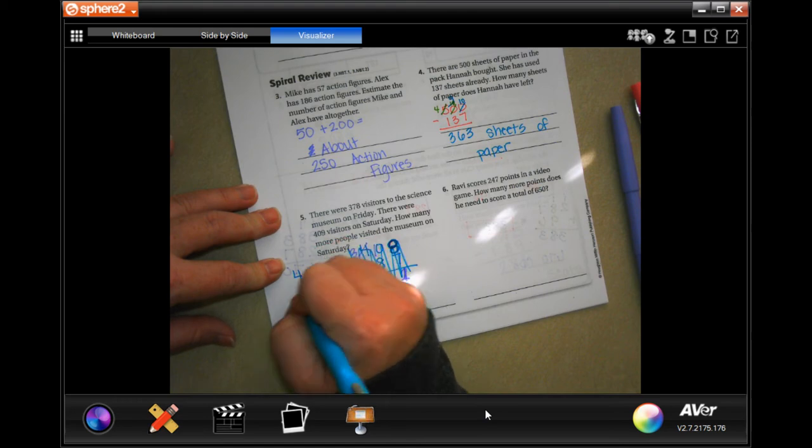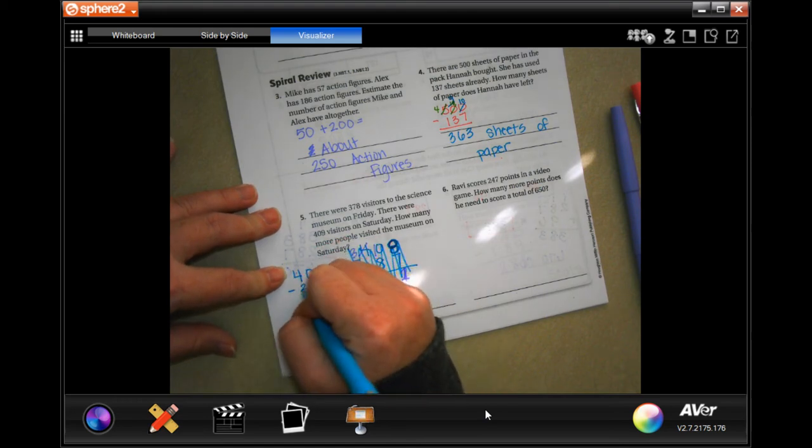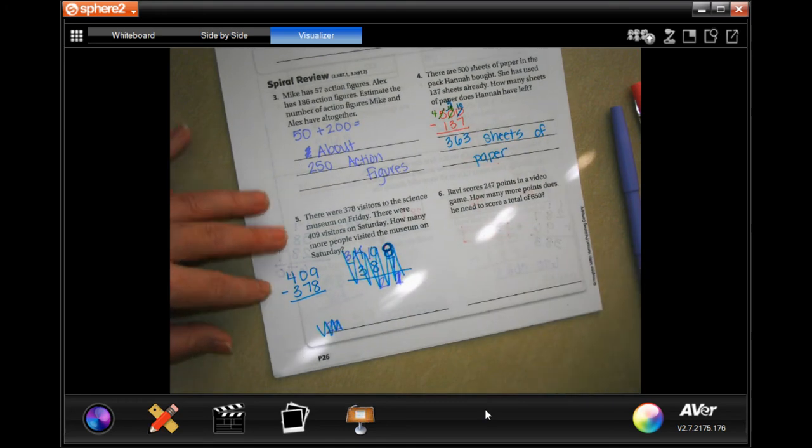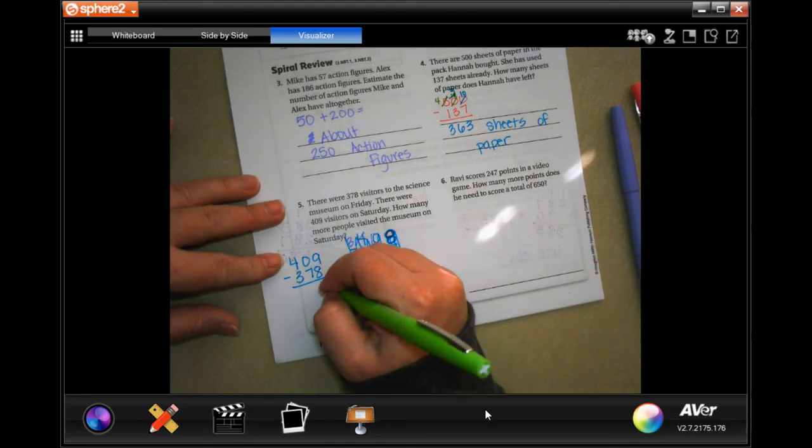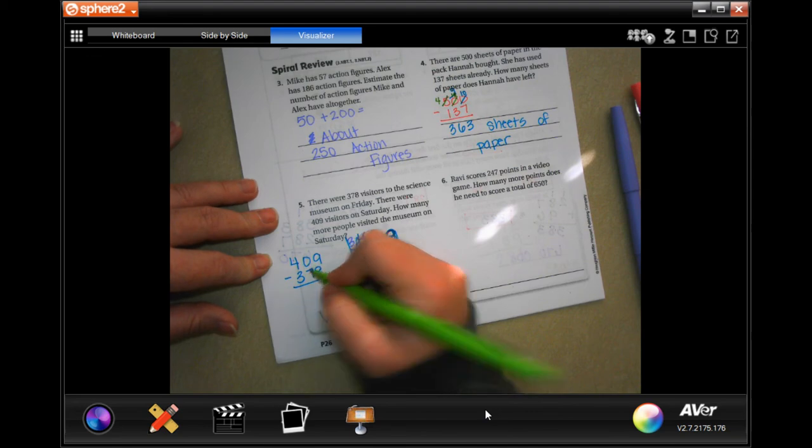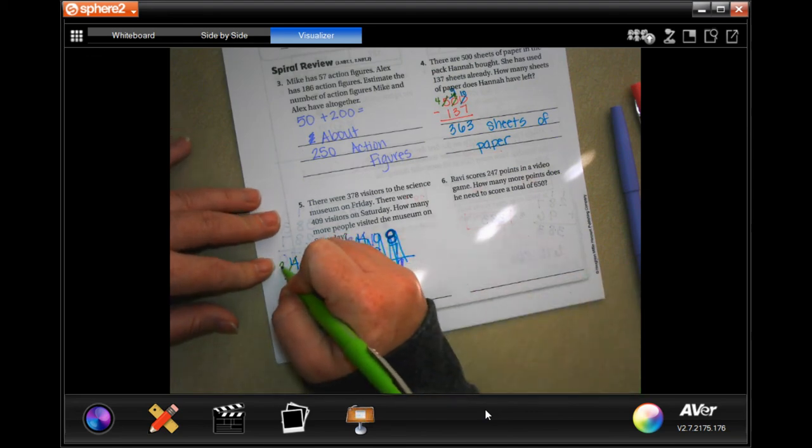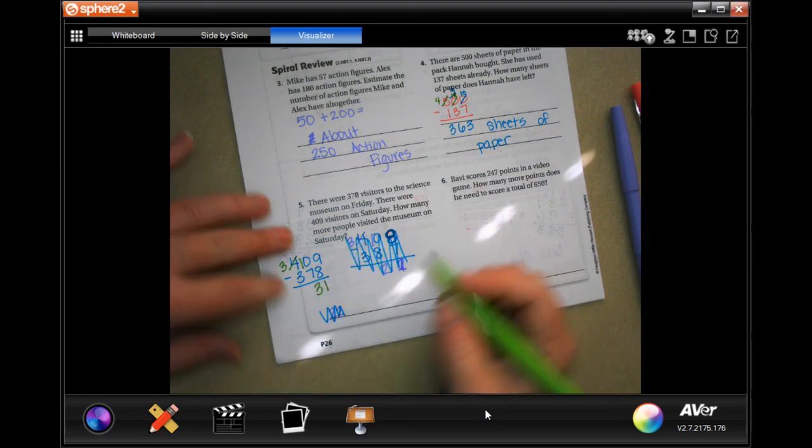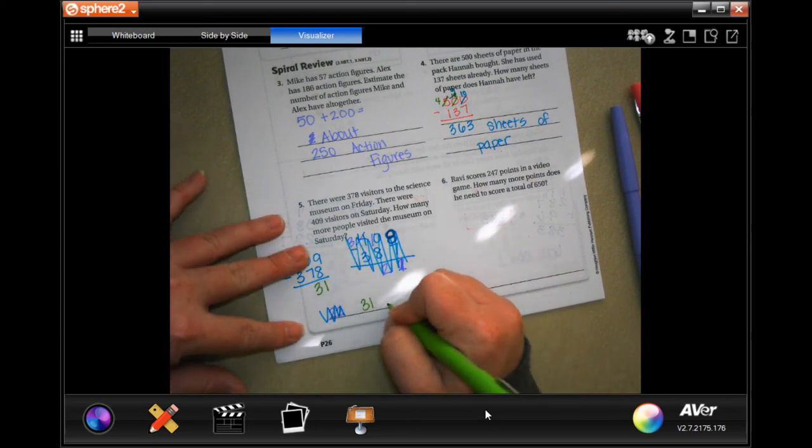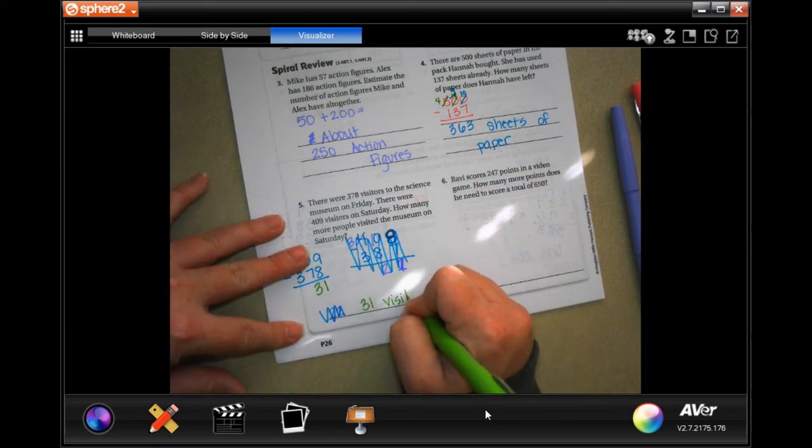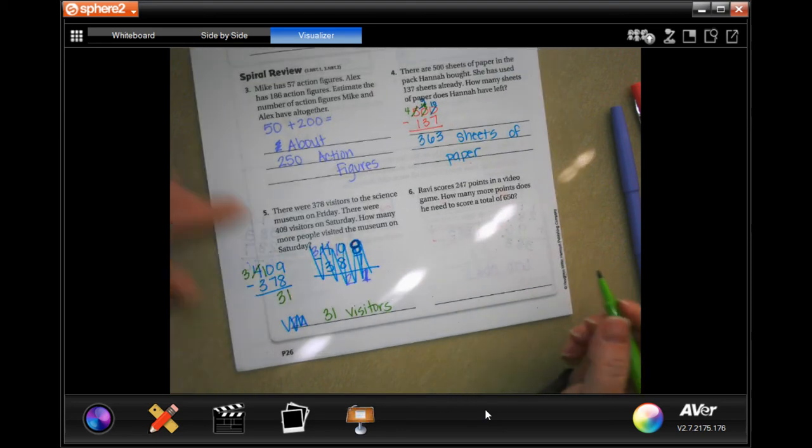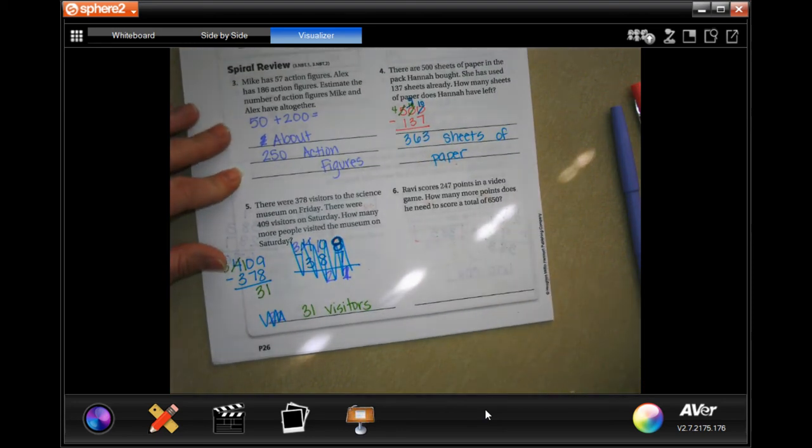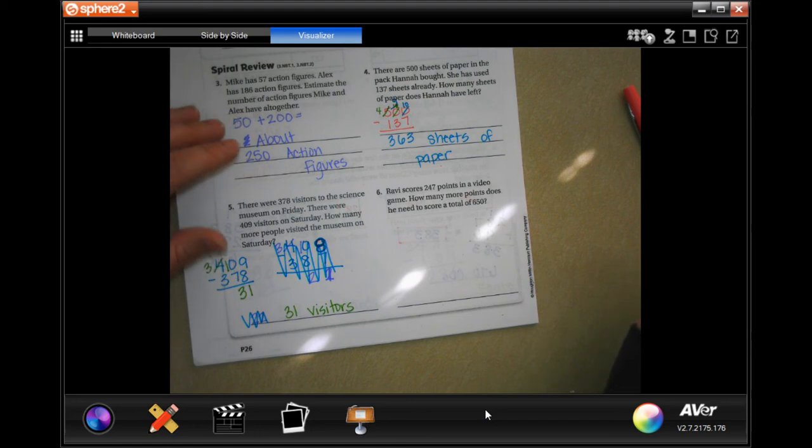So, 409 minus 378. Now, let's see if Miss Leah can get this right. 9 minus 8 is 1. 0 still can't take away anything. So, we are going to go over and make that a 3. That's a 10. Now, 10 minus 7 is 3. So, 31 visitors. Sorry, y'all. Ignore the first one. Miss Leah is battling some allergies.